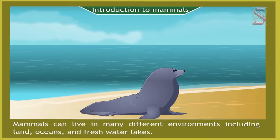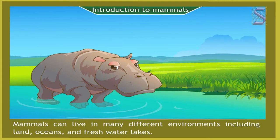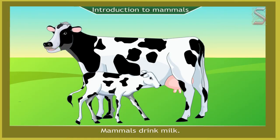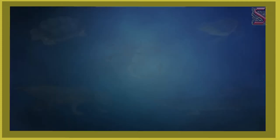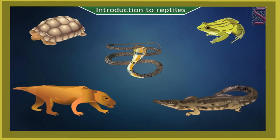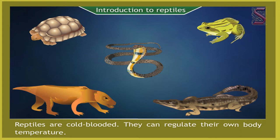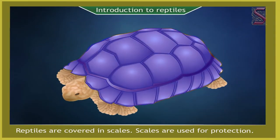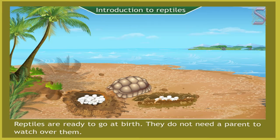Mammals can live in many different environments including land, oceans, and freshwater lakes. Mammals have hair or fur. Mammals drink milk. Mammals have backbones. Introduction to reptiles: reptiles are cold-blooded. They can regulate their own body temperature. Reptiles are covered in scales, which are used for protection.